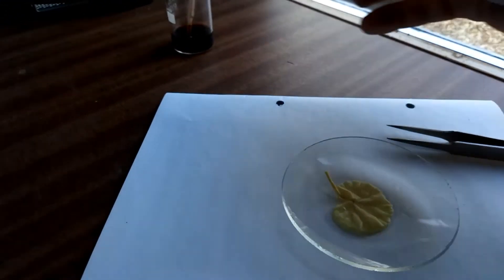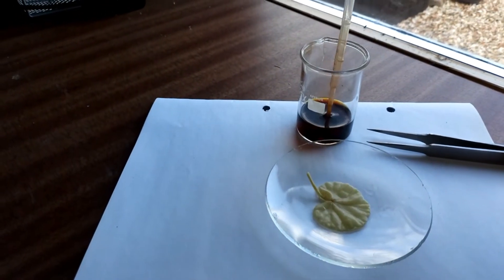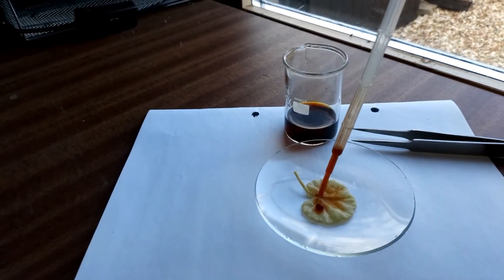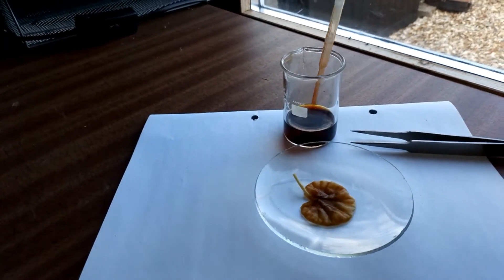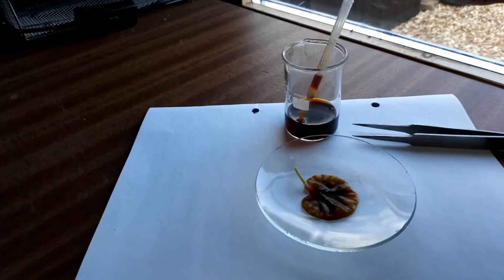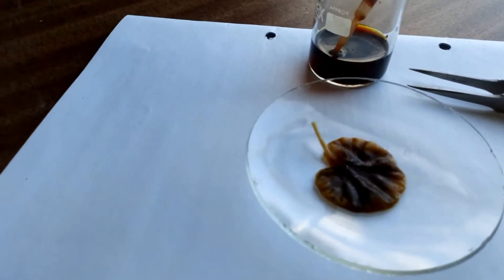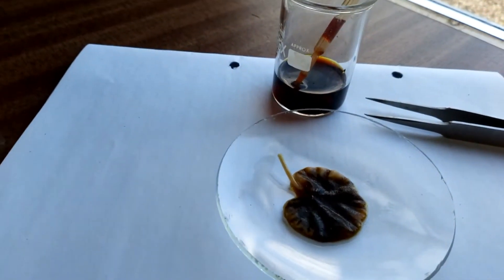So having done that we're now ready to put the iodine solution on. So just get a little bit, put the pipette there. Remember we're testing it now for starch. And if it goes a dark color, then we've got starch present. And you can see there that that has indeed gone a dark color.